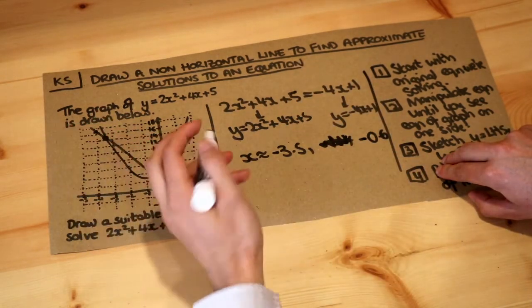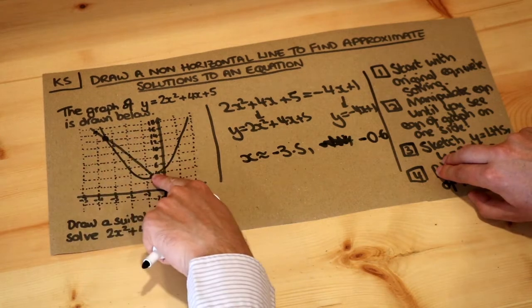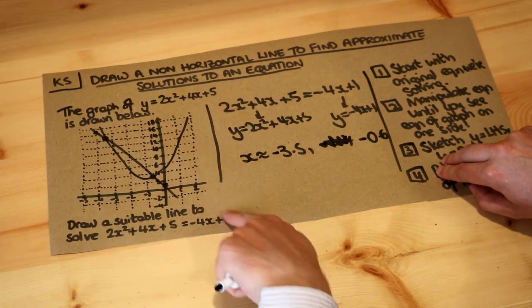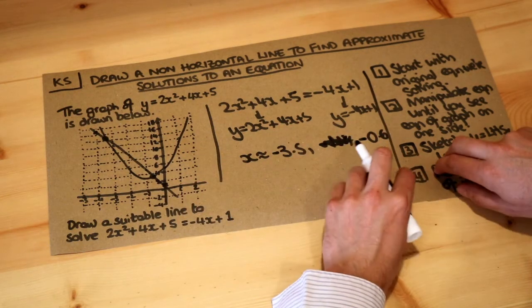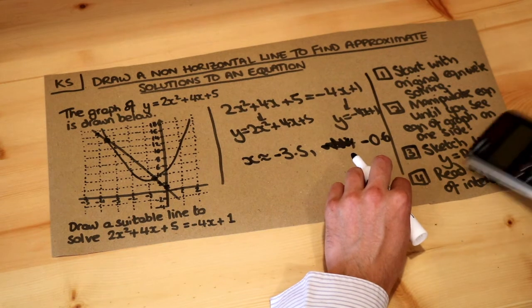So now we've got these values of x. And by the way, we're only interested in the values of x here, not the values of y, because look at this equation we're solving in terms of x. There's no y involved here.